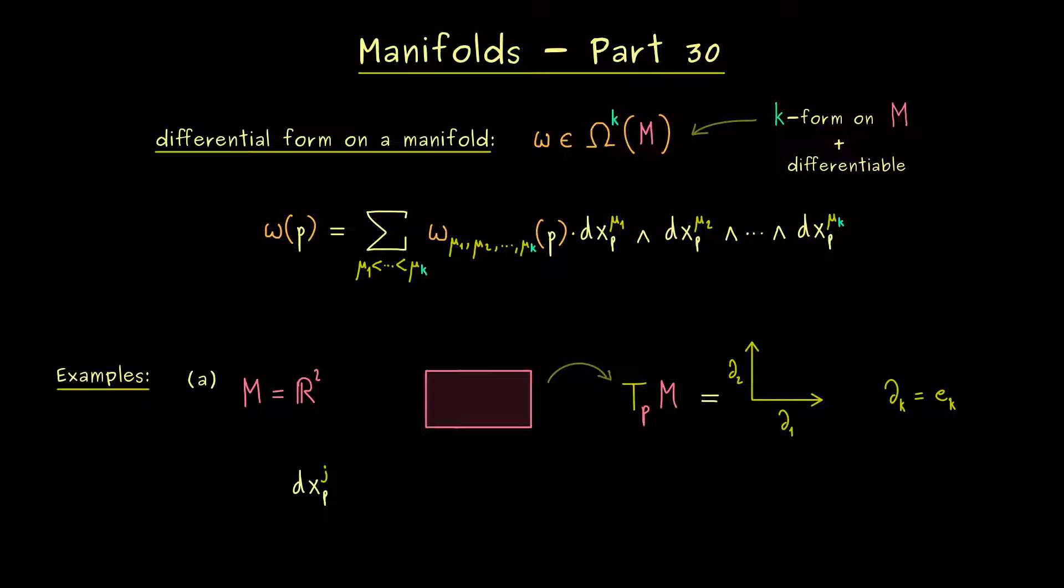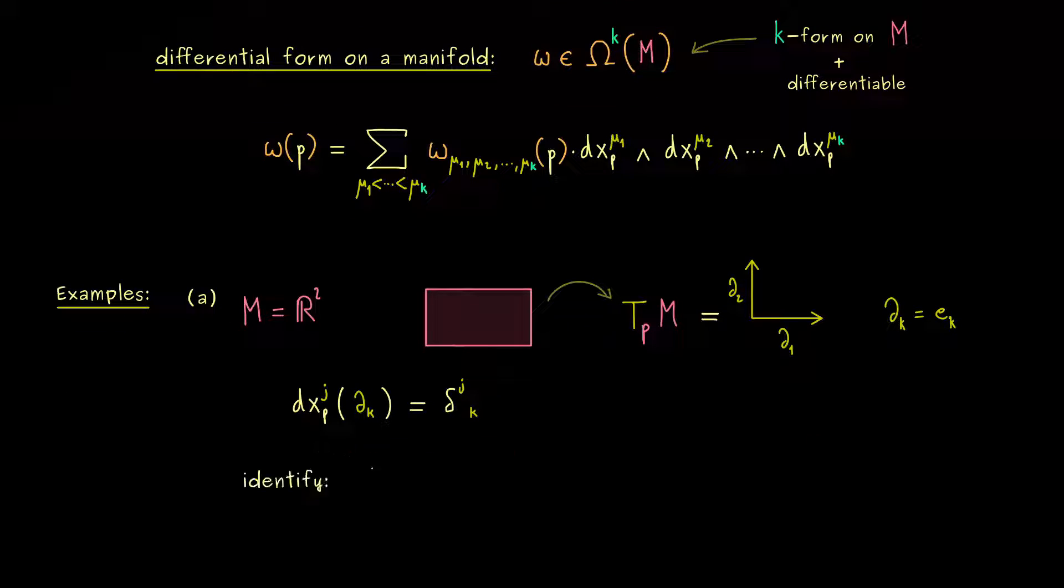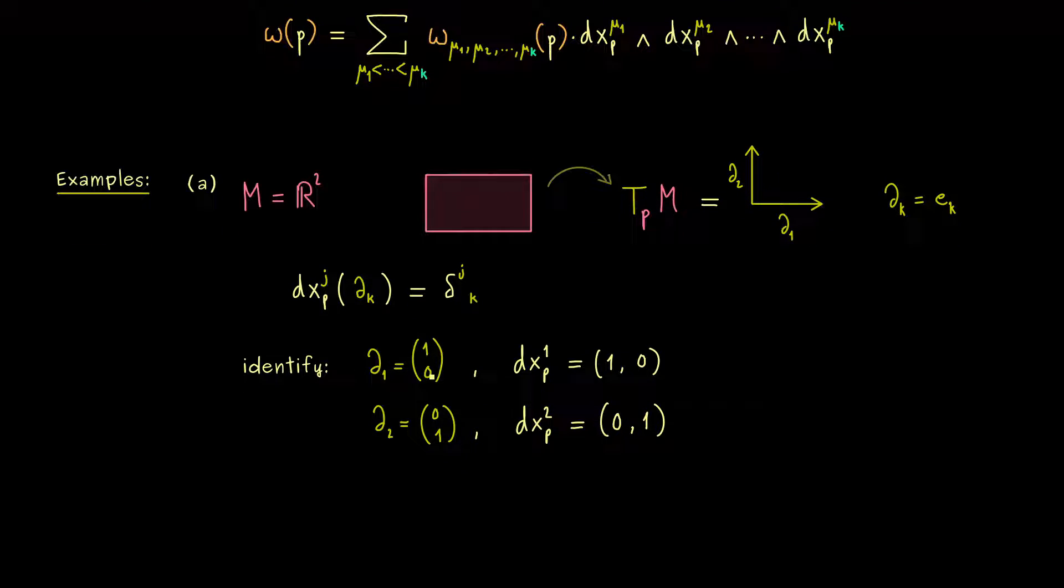Now you might recall these one-forms dx^j from above are exactly defined by using the coordinate basis. More precisely, the result here should be exactly the Kronecker delta δ_jk. Therefore, if we see these coordinate vectors as column vectors, we can identify the one-forms with row vectors. If we do that, it makes everything very simple because then we can simply write dx¹ as the row vector (1,0), and similarly dx² is (0,1). Hence this combination with one-form and tangent vector is simply a matrix multiplication—row vector times column vector gives us a scalar.